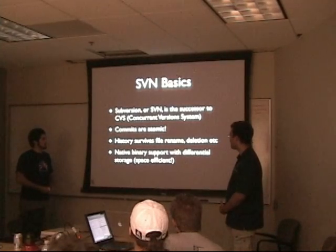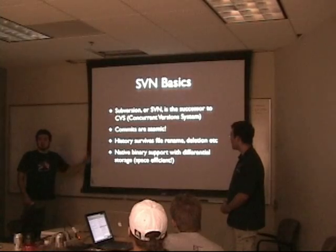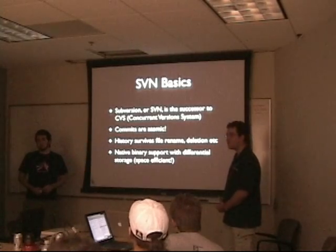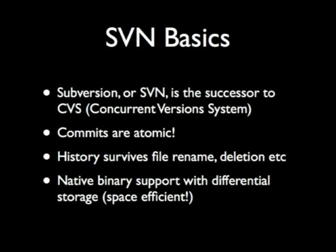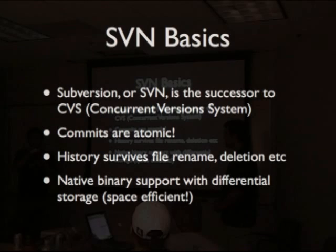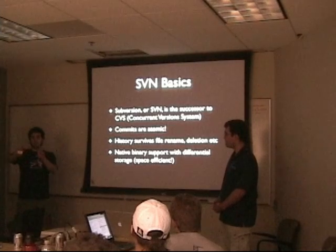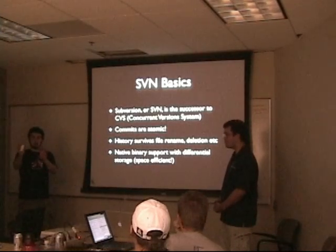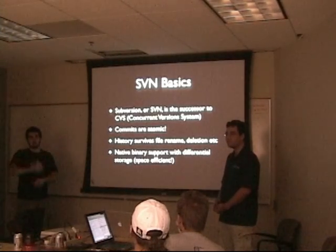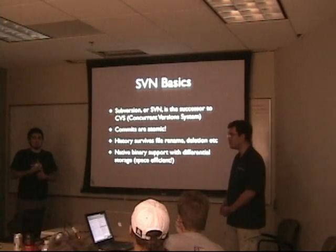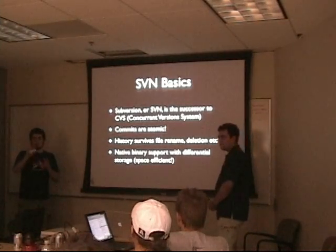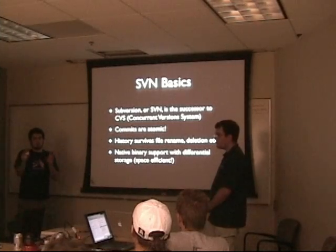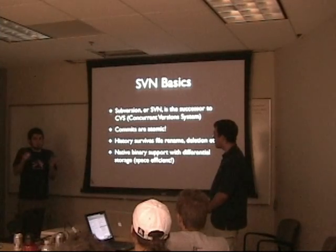For example, CVS would not have atomic commits. For those who don't know what atomic means — it means that when you make a change, if it fails in the middle, nothing is affected, but at the very end of a successful completion, it takes effect. This is a big deal in file systems and databases mostly. If you have a transaction that fails in the middle and you don't have an atomic database, that might mess things up.